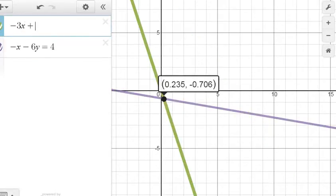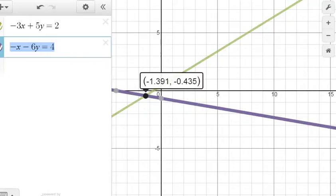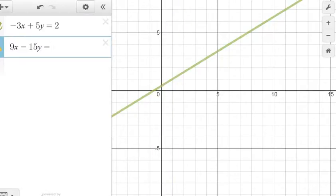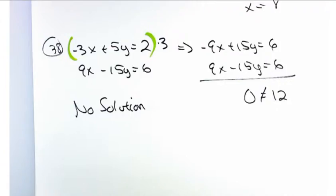Minus 3x plus 5y equals 2. And then, parallel to that, 9x minus 15y equals 6. So, the two lines are exactly parallel. That's why you're getting this strange thing that really represents no solution.